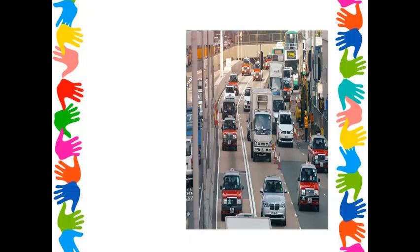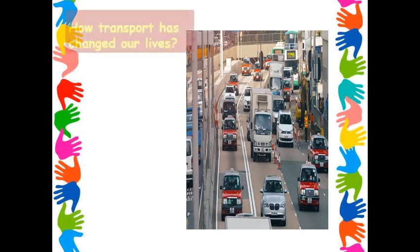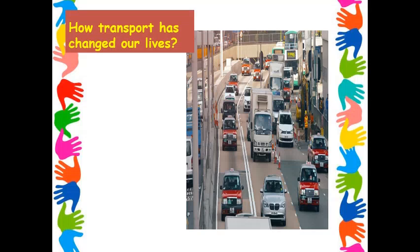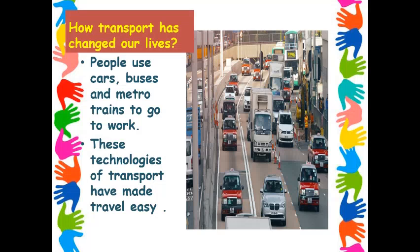Can you tell me what do you see in this picture? We can see so many transports — vehicles, buses, trucks, cars, vans, etc. Let us talk about how transport has changed our lives. People use cars, buses and metro trains to go to work. Think about what would happen if these cars, buses and metros were not there. It would be very difficult to get to work in a short time. These technologies of transport have made travel easy, and moreover, they save our time.